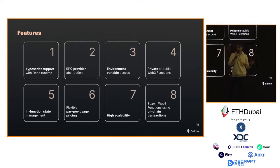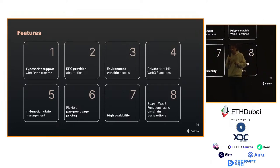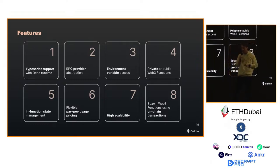Key features: TypeScript support with a sandboxed Deno runtime, great RPC provider abstractions making blockchain data fetching and transaction sending across chains insanely easy. You get access to secrets so you can have secret API keys stored securely, and you can have private or public Web3 function code. Function state management gives you access to persistence — you can access a Redis DB, dump data into a SQL database. Flexible usage-based pricing, auto-scaling — all the stuff you know from the public cloud. High scalability. And one cool quirk: you can actually spawn your Web3 function runner from a smart contract event — it picks it up and calls back into the smart contract. This is truly the marrying of Web2 with Web3.